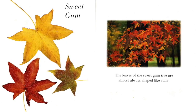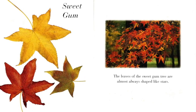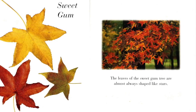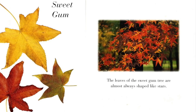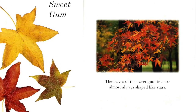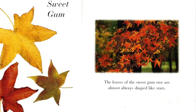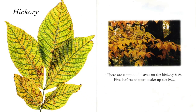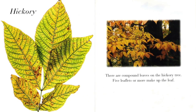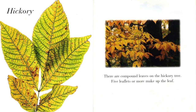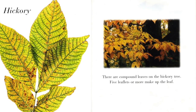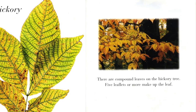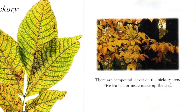Sweet gum. The leaves of the sweet gum tree are almost always shaped like stars. Hickory. There are compound leaves on the hickory tree. Five leaflets or more make up the leaf.